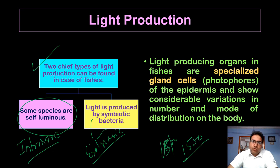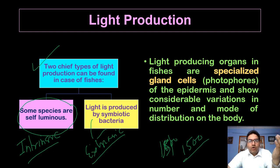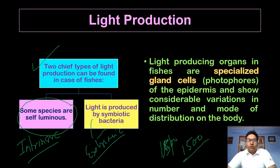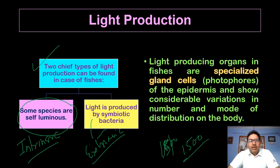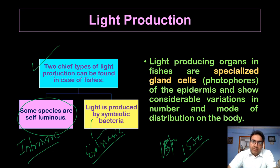In the other cases, intrinsic light evolved through chemical synthesis. These fishes have become surprisingly diverse in the deep ocean and control their light with the help of the nervous system. It is used not just to lure prey or hide from predators, but also for communication.